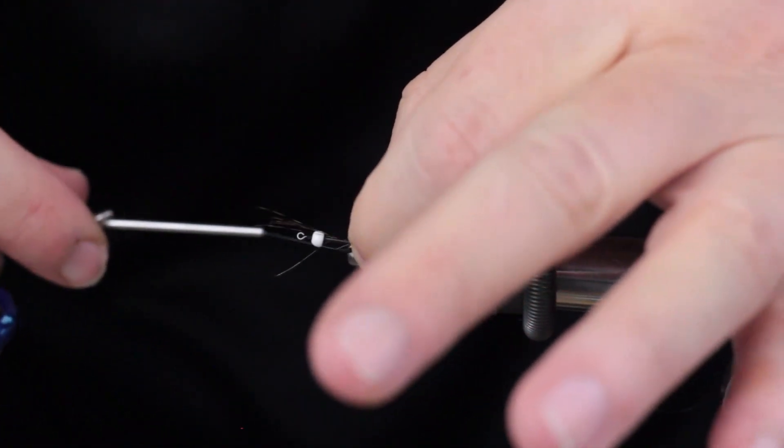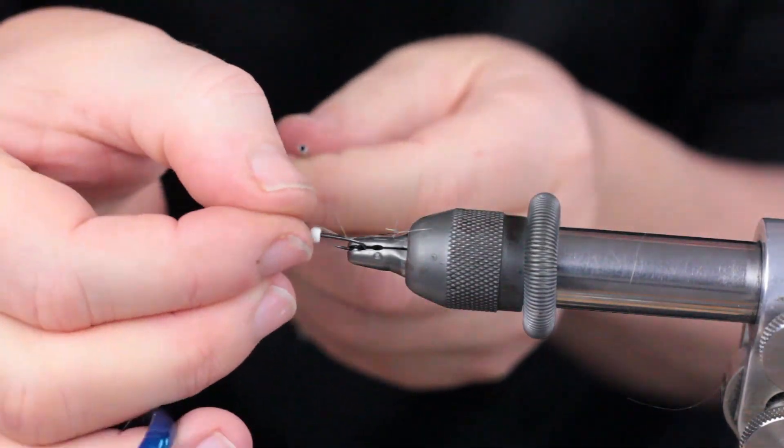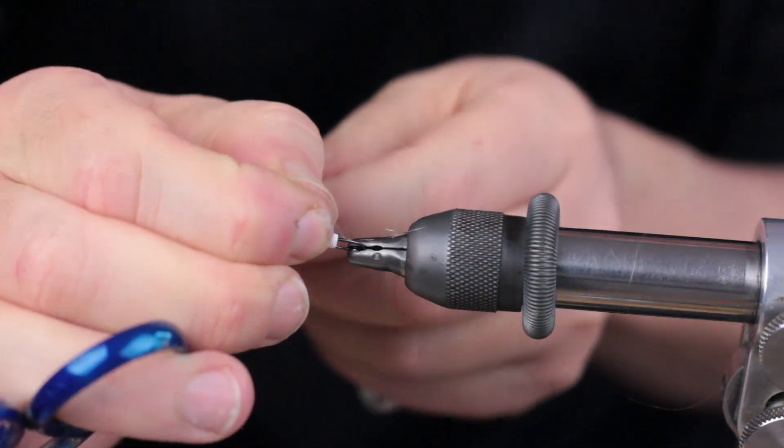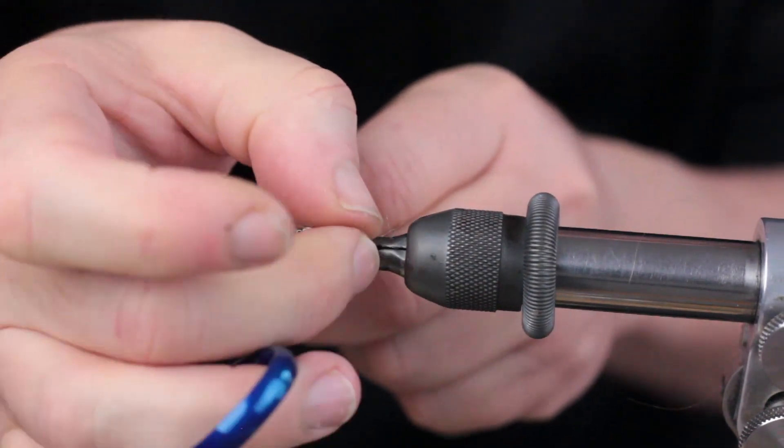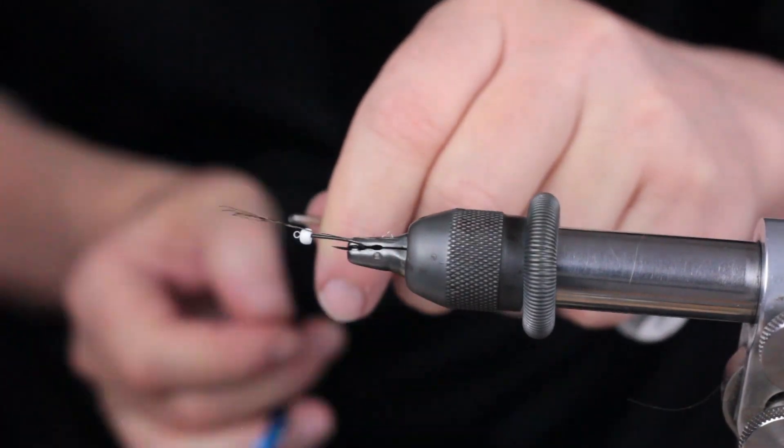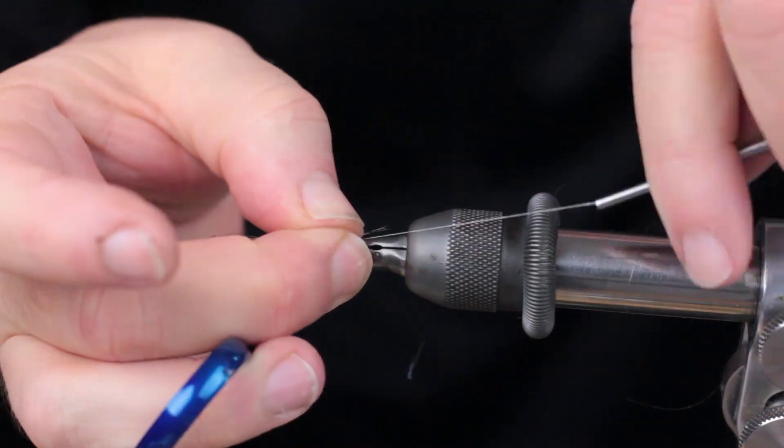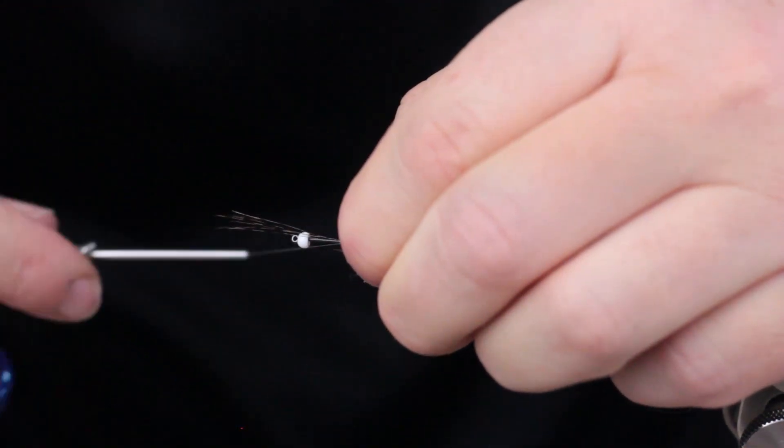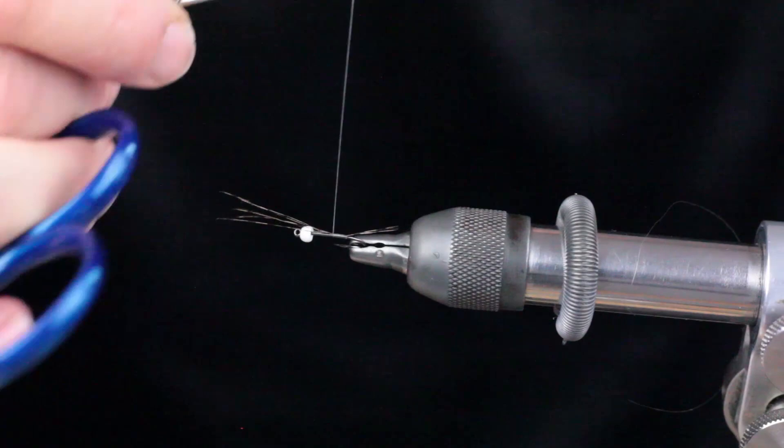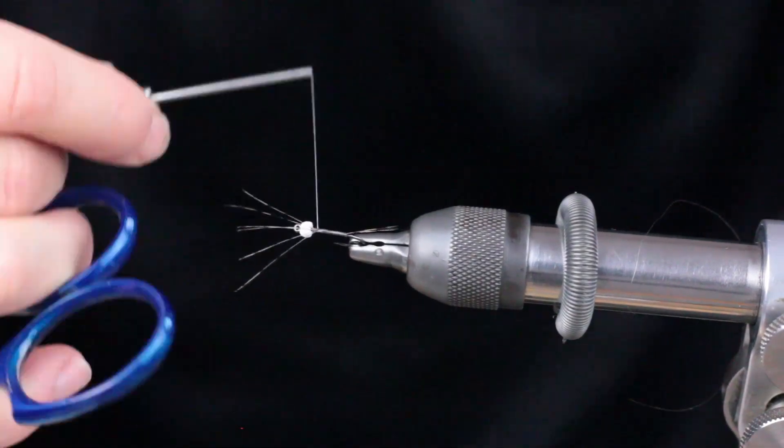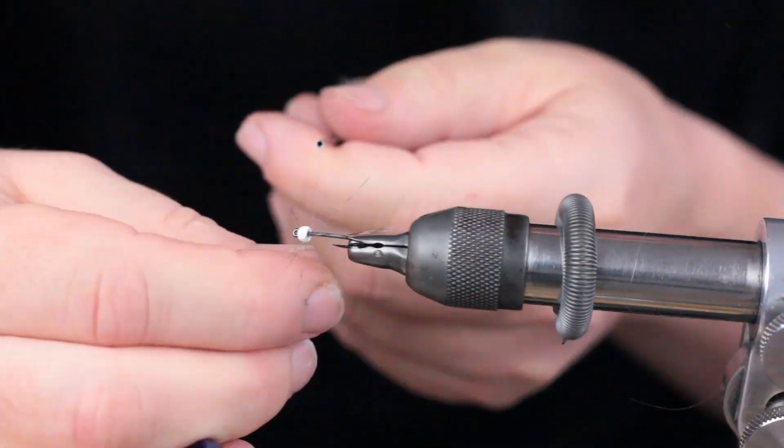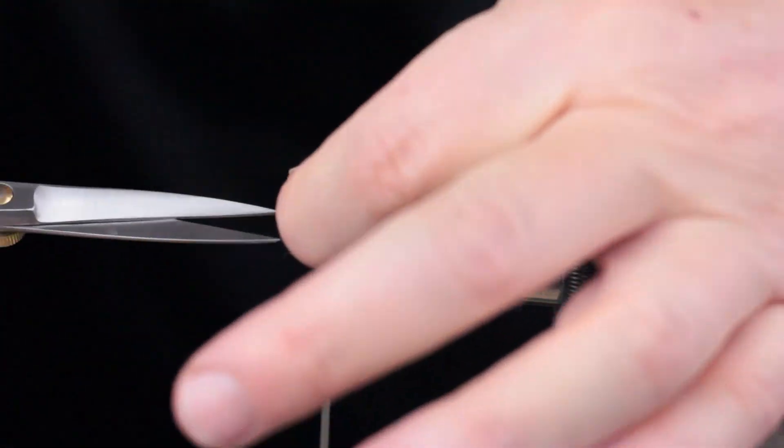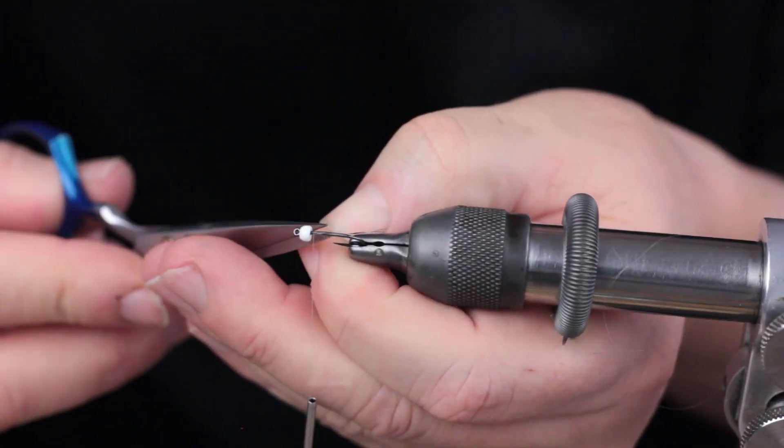I'll do one more turn. Let's measure that for length, right about there maybe. A wrap under helps to lock that up, then a wrap over, and we'll wind all the way back up towards the front. Trim away the excess.